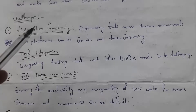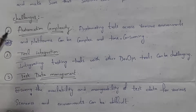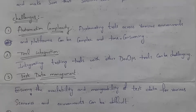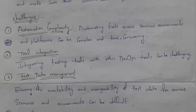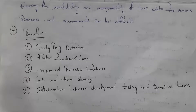There are challenges when performing continuous testing in DevOps. The first is automation complexity — performing various kinds of automation testing across various platforms is time consuming. The second is tool integration — integrating testing tools with DevOps tools is very tough. The third is test data management — storing and managing data in a particular place to perform various kinds of testing is difficult; ensuring the availability and manageability of test data for various scenarios and environments can be challenging.